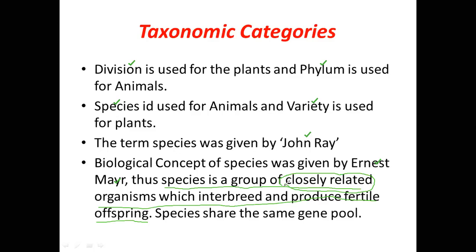If a human being and a human being reproduce, the human male sperm will fuse with the female ovum to form a fertile offspring. But if a monkey and a human being try to reproduce, the male sperm of the human being is unable to fertilize the female ovum. Even if fertilization occurs, the embryo will not form properly. And even if the embryo forms, it will be non-fertile. This is the basic concept of species given by Ernst Mayr.